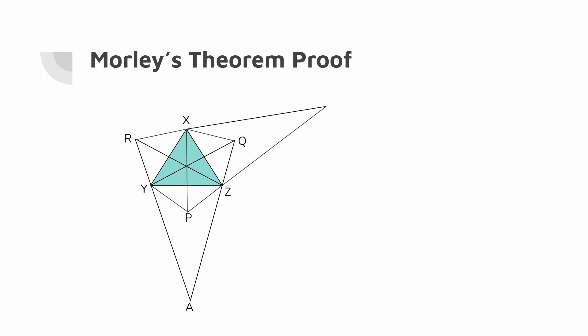Let us now extend lines PZ and RX to a point B, and extend QX and PY to a point C. Through a similar process, we get that angle PBR equals beta and angle QCP equals gamma.